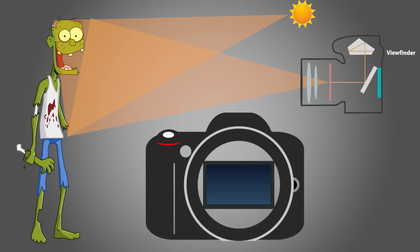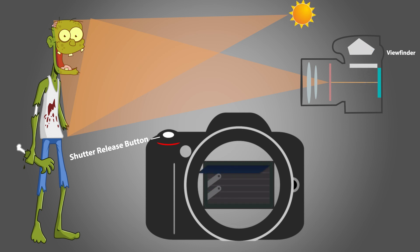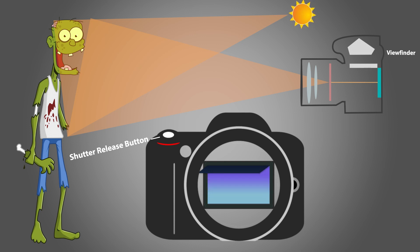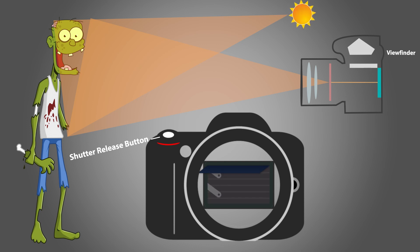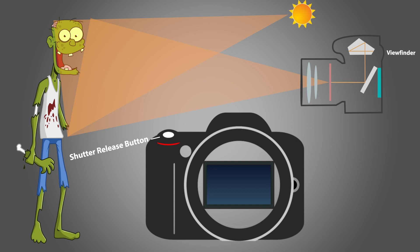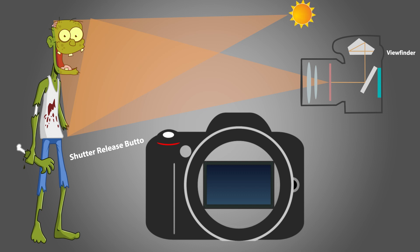In a DSLR, when you press your camera shutter release button — that big button to take your photo — the mirror flips up and lets light pass into the camera instead of the viewfinder. After this, a small curtain moves from top to bottom to expose the sensor, and then another curtain falls down to cover up the entire sensor. After the second curtain closes, the mirror falls back to its position and the curtains go up to their original position.